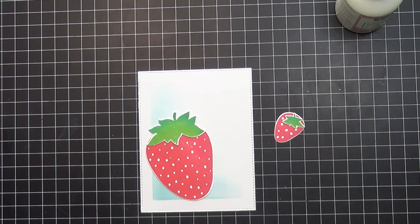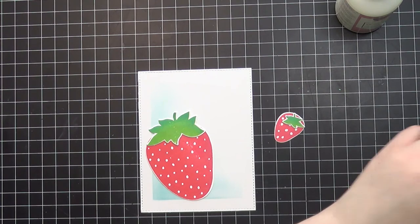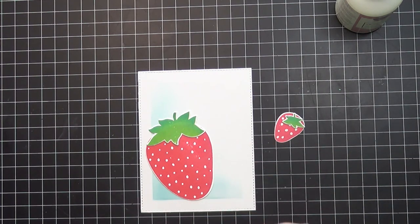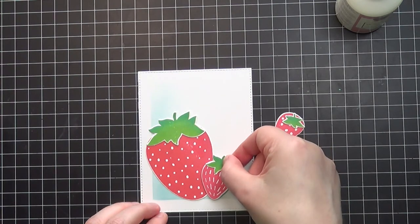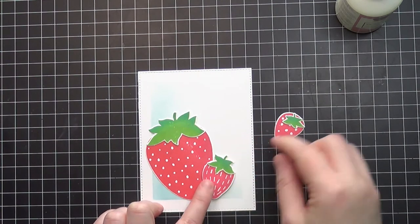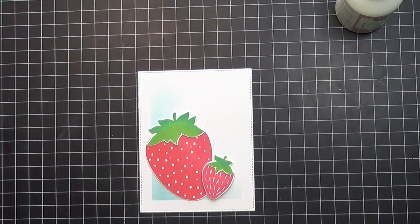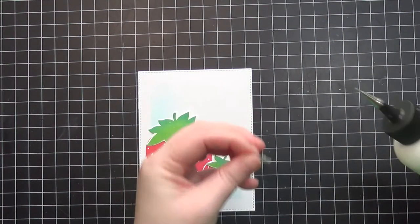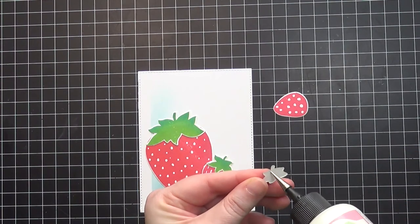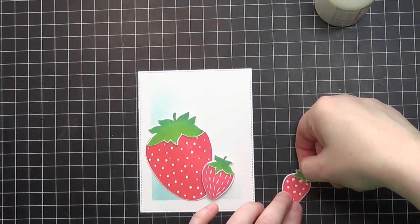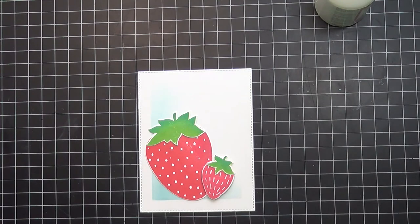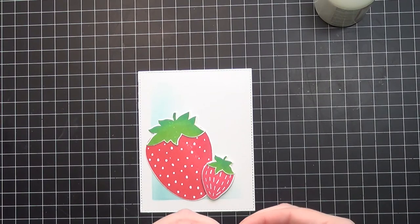I'm placing this down onto the biggest strawberry next to it. I wanted to pop this up because with such a simple design, adding dimension to one of the strawberries helps the layout. Next I'm adding liquid glue to this final strawberry and placing it down. I really love the combination of the three different size strawberries and the variation in the arrangement.